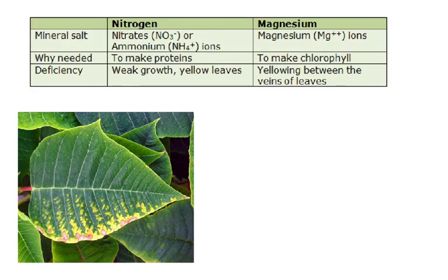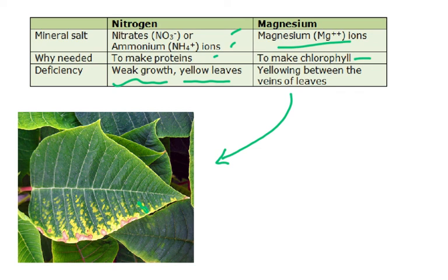A table summarizes: nitrate ions and ammonium ions are needed from the soil to make proteins; deficiency causes weak growth and yellow leaves. Magnesium ions are needed to make the chlorophyll molecule only. A deficiency of magnesium causes yellowing between the veins of the leaf — a typical symptom visible on a magnesium-deficient plant.